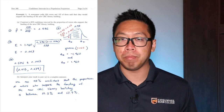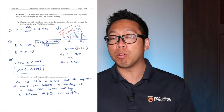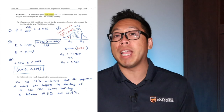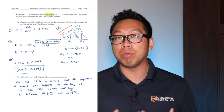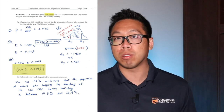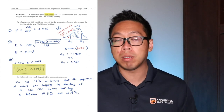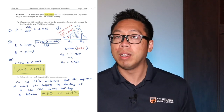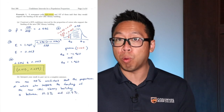In the last lecture, we talked about confidence intervals for a proportion. In particular, we were interested in the proportion of voters who would support the CRC library voting. We took a sample of 238 voters and from that sample, we were able to say the proportion who would support the voting would be somewhere between 51.3% and 63.9%. That's a confidence interval for a proportion. Today, we'll talk about confidence intervals for a mean.